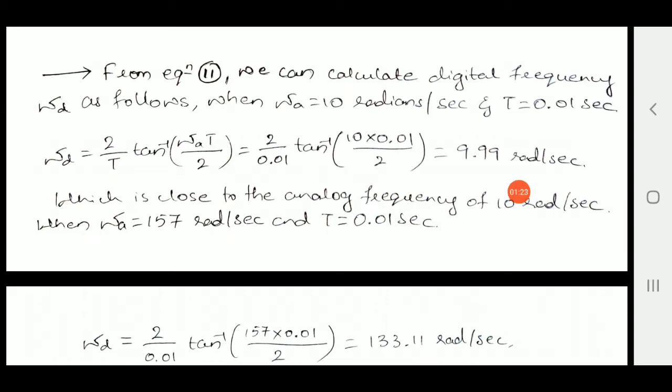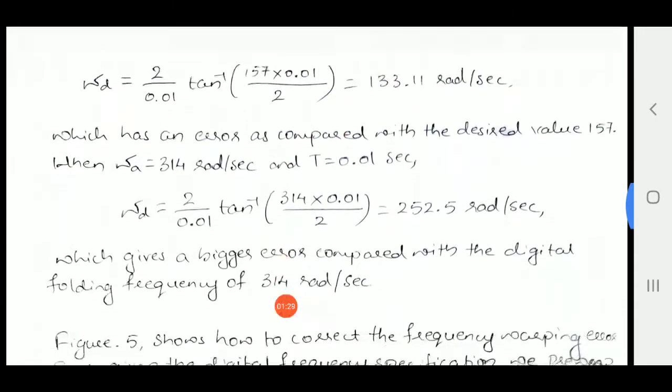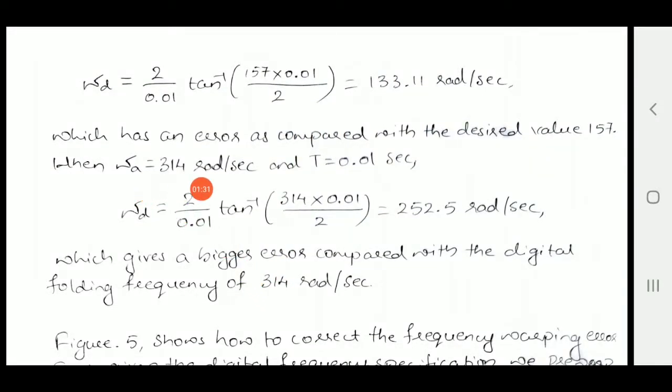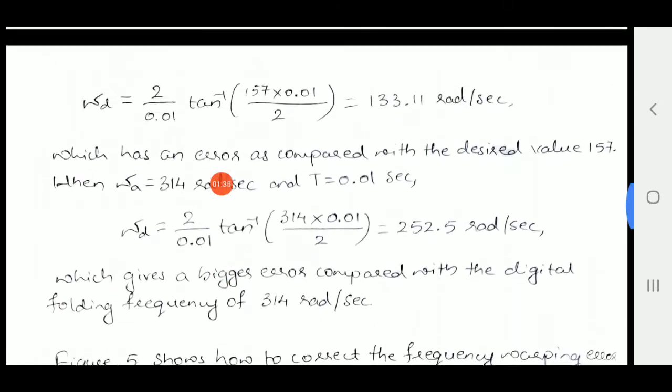You got the digital frequency for the first value. Similarly, you have to do it for the second, that is W_a is 157 and another one W_a is 314. Like this we can solve the third problem which is very simple if you use the analog and digital frequencies formula, that is W_a and W_d.